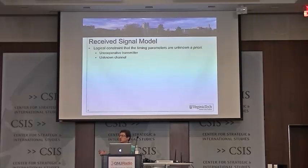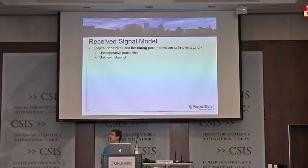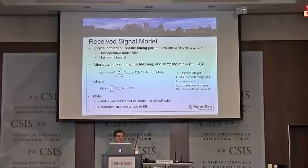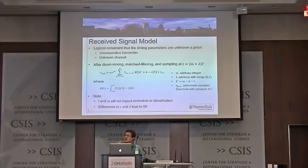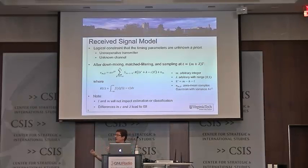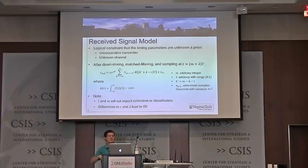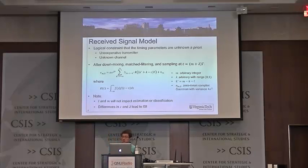If we down-mix, match-filter, and sample without knowing the fractional time delay, what we get is our symbols with phase and gain from the channel, plus an infinite summation representing inter-symbol interference from the root-raised cosine pulse — we're not sampling at the optimal points, so the signals are corrupted.